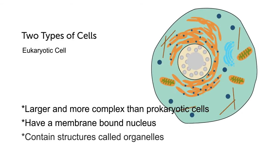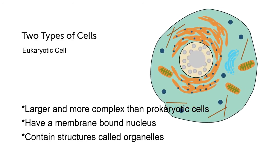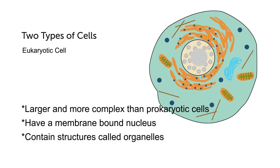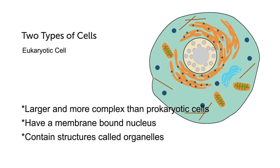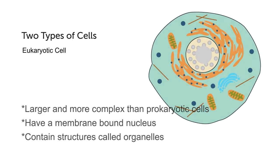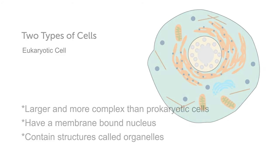Eukaryotic cells also have structures called organelles, which each have specific functions inside eukaryotic cells, much like the organs inside the human body.